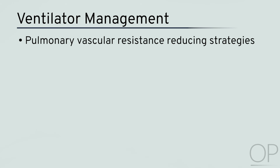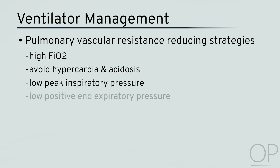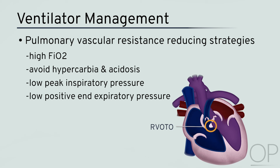A fluid bolus of 10-20 cc per kg of lactated Ringer's or normal saline can be used as a first step to maintain preload and support blood pressure. Careful attention to all aspects of ventilation is extremely important in patients with Tetralogy of Fallot. Traditional pulmonary vascular resistance reducing strategies — such as higher FiO2, avoidance of hypercarbia and acidosis, and low peak inspiratory pressure and PEEP — are less effective for the management of pulmonary blood flow in severe Tetralogy of Fallot because the right ventricular outflow tract obstruction itself is the main limiting factor for antegrade flow. However, in the presence of a PDA as an additional source of pulmonary blood flow, attention to pulmonary vascular resistance and adequate ventilator settings are important to optimize flow across the patent ductus arteriosus.